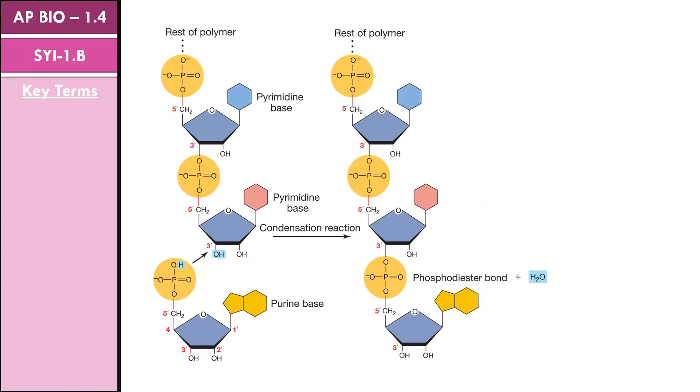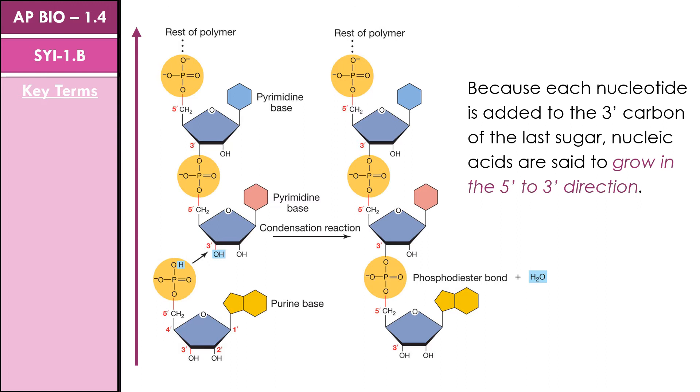The phosphate on the new nucleotide is attached to the 5' carbon of its sugar, and the bond occurs between it and the 3' carbon on the last sugar of the existing chain. Because each nucleotide is added to the 3' carbon of the last sugar, nucleic acids are said to grow in the 5' to 3' direction. This is an important thing to keep in mind for AP biology as it comes up numerous times throughout the year.